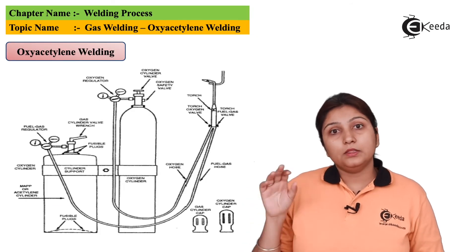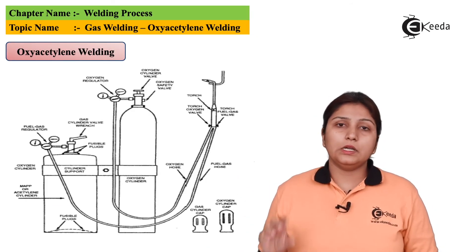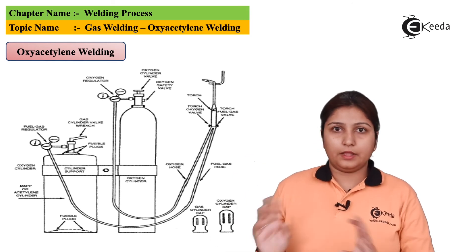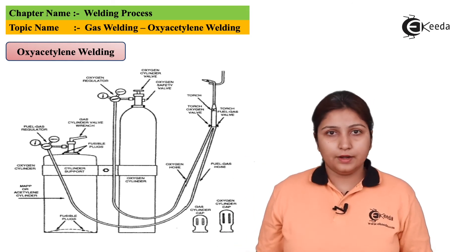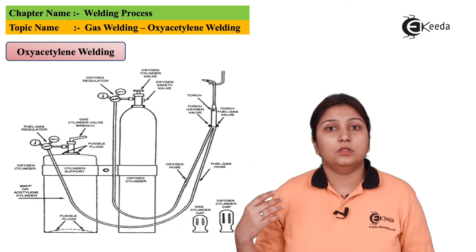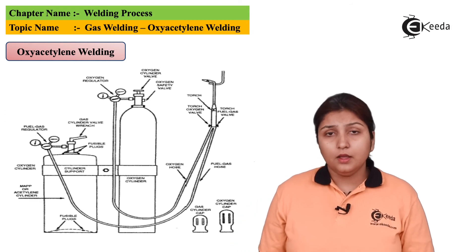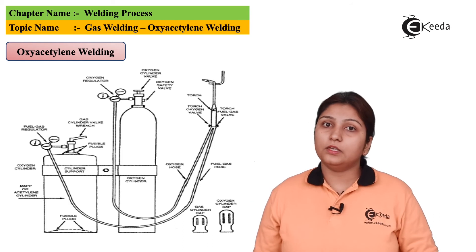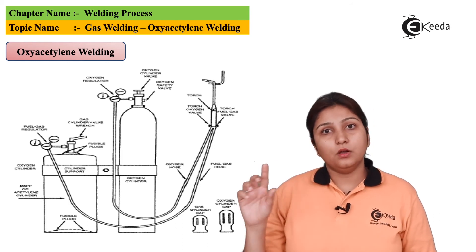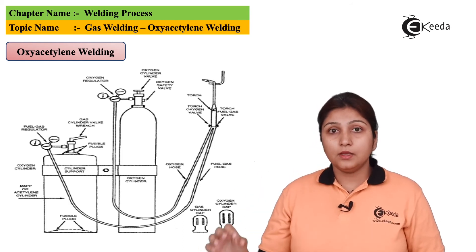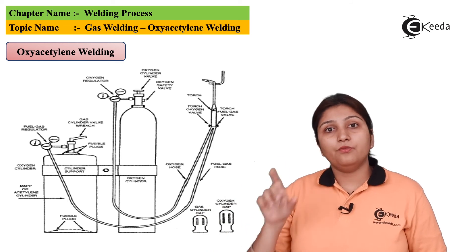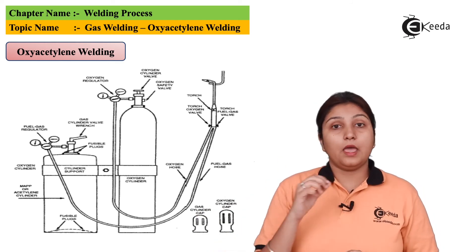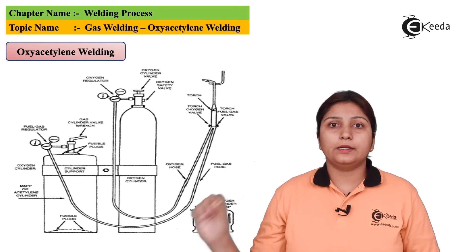As you can see in this diagram, there is a cylinder which contains different regulators like a pressure regulator. You have two cylinders basically — one contains oxygen and the second contains acetylene. Both have some regulator for gas as well as pressure. The gas mixes at a certain pipe and from one end the mixture of gases comes out and the actual welding takes place.